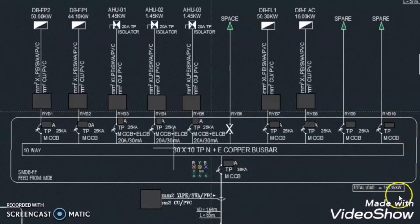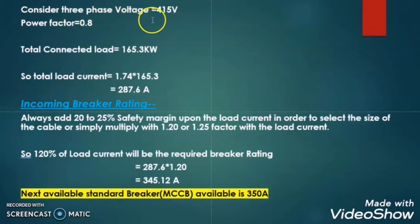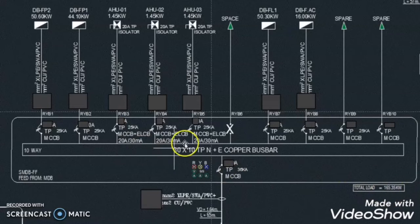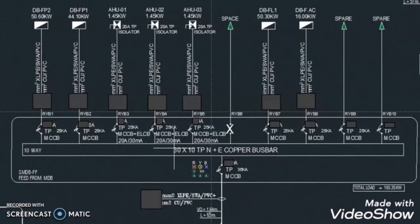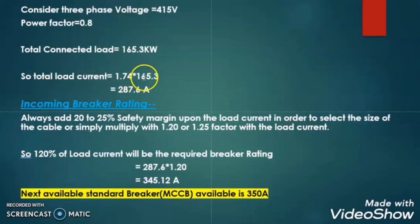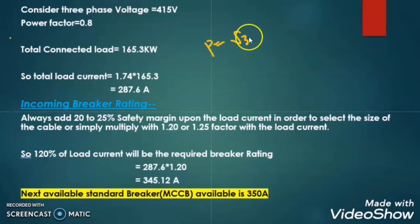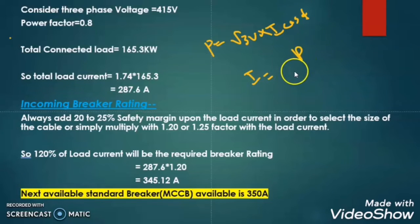Let us calculate first the main incomer breaker rating for this sub main distribution board. Here you can see that the total load connected is 165.35 kW. I consider that the 3-phase voltage is 415V and the power factor maintained is 0.8. The total connected load for this SMDB is 165.3 kW. So the total load current is 1.74 multiplied by the total connected load, that is 165.3. This is the shortcut method. If you want to go with the power formula, then P = √3 × V × I × cos φ, so I = P ÷ (√3 × V × cos φ).